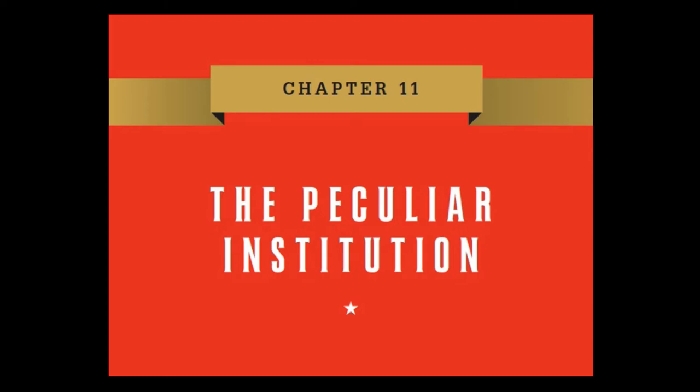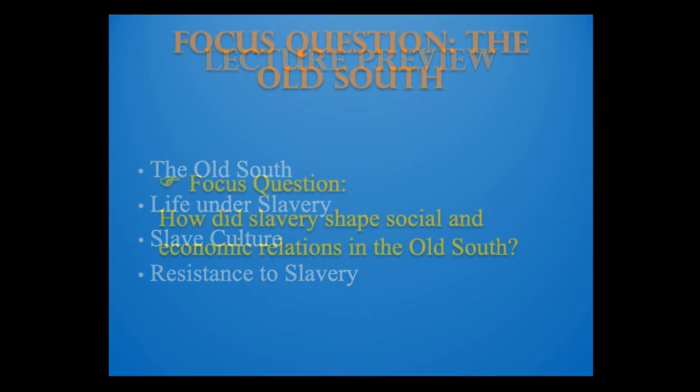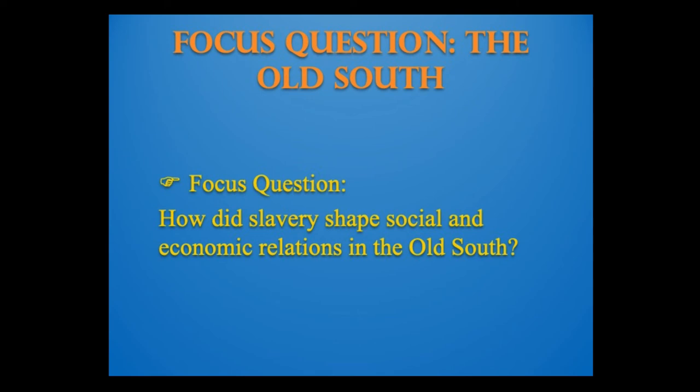These are the things we're going to be looking at as we examine slavery in the United States during the first half of the 19th century, roughly 1800 to 1860. This lecture is going to be broken up into four sections: The Old South, Life Under Slavery, Slave Culture, and Resistance to Slavery. We'll start with the Old South. The focus question for this segment is: how did slavery shape social and economic relations in the Old South?